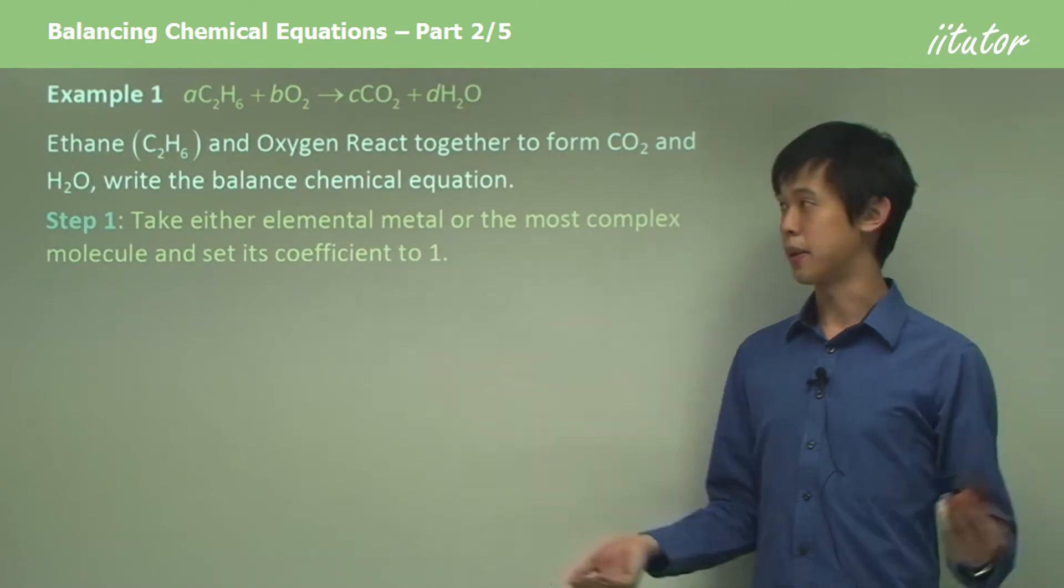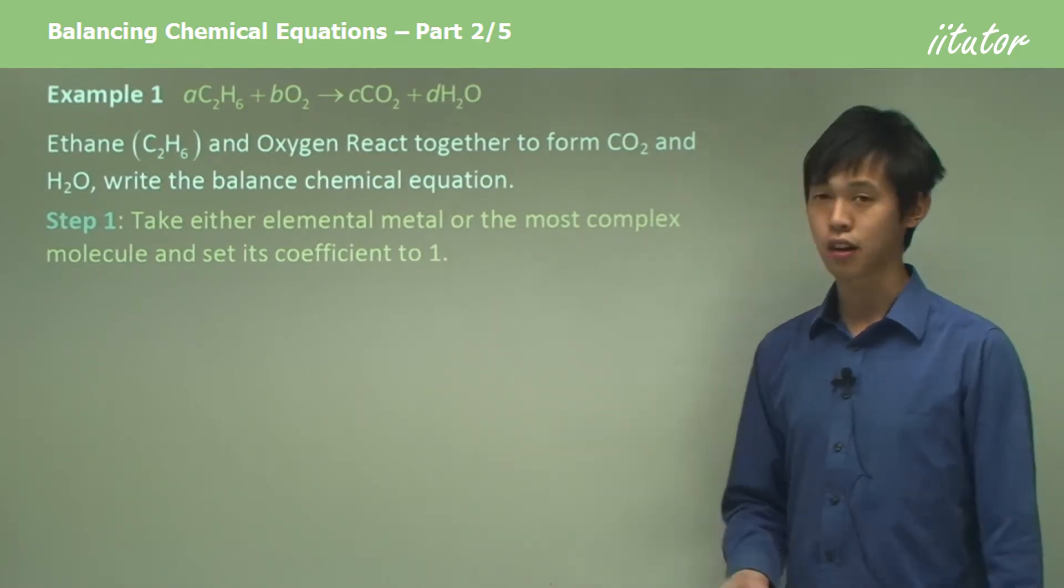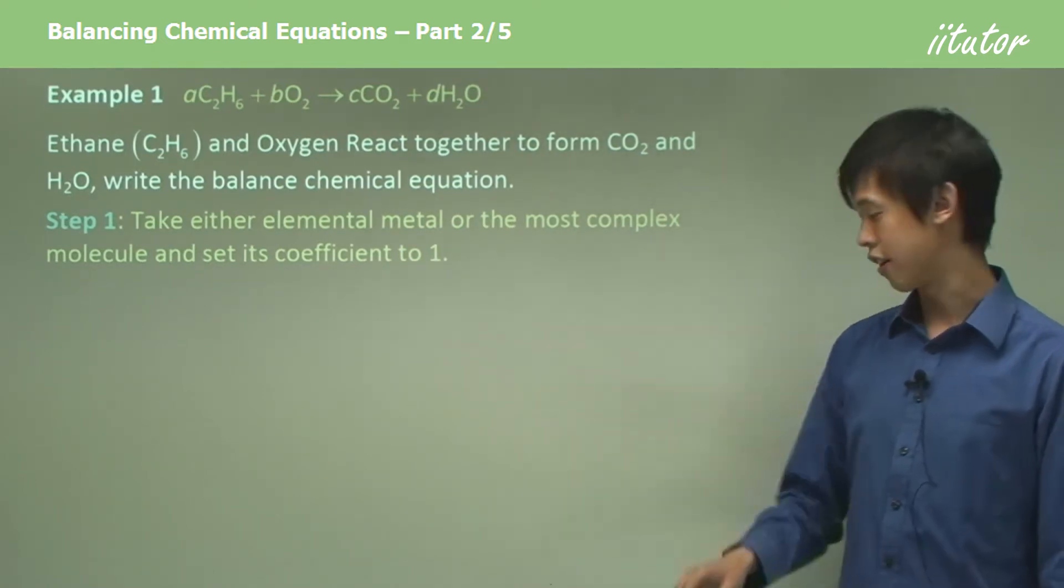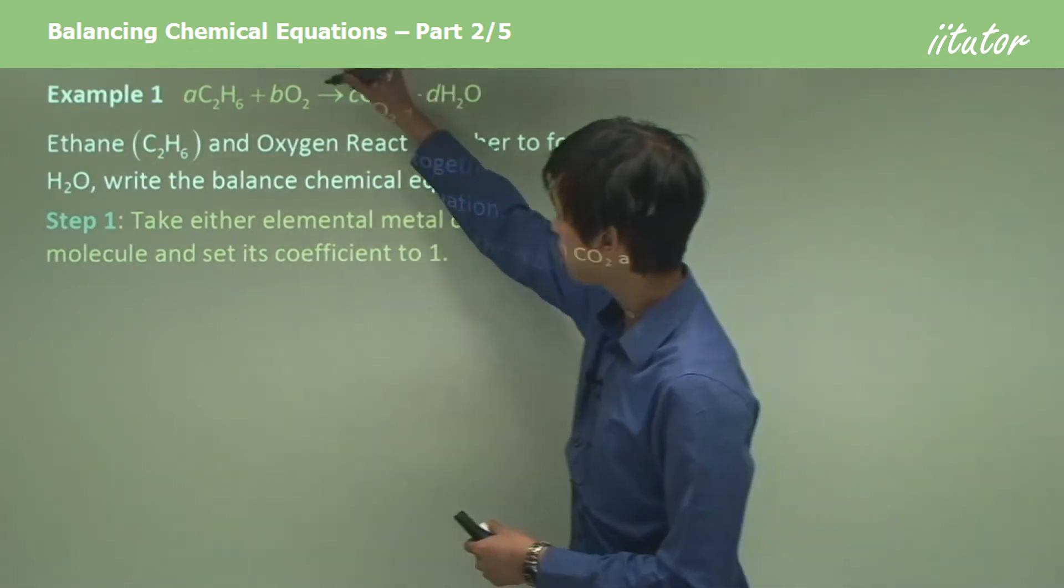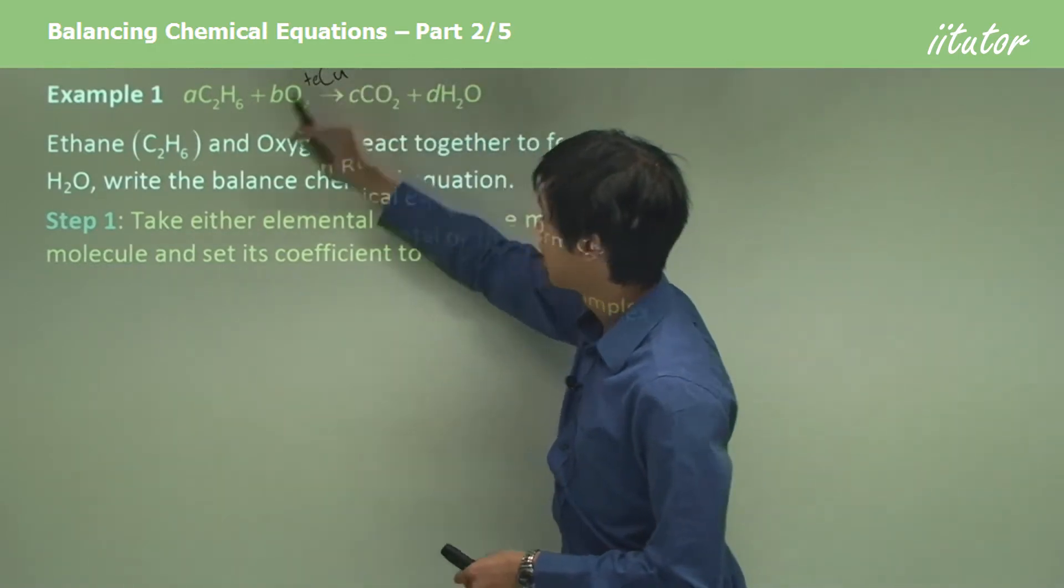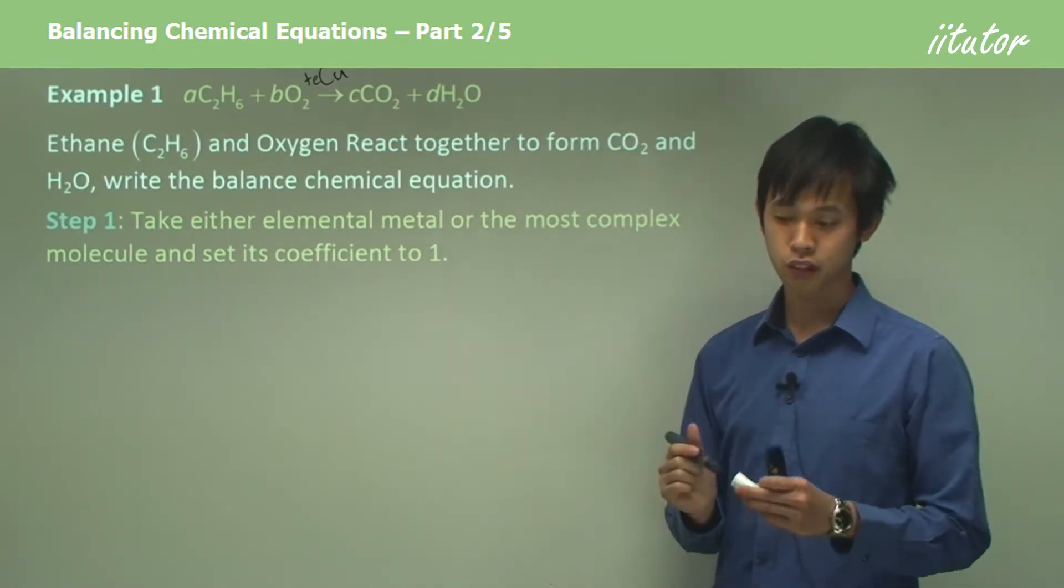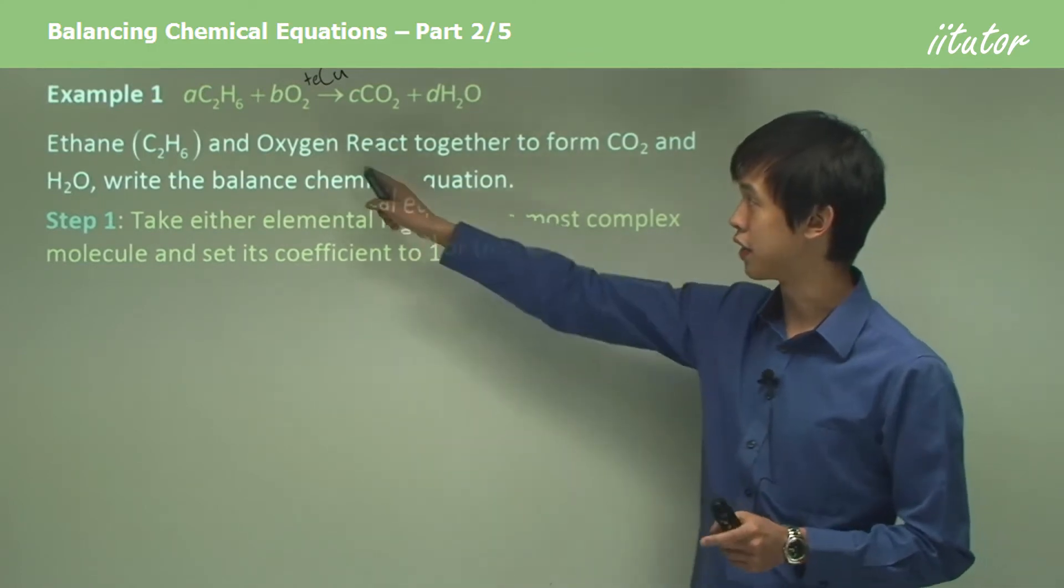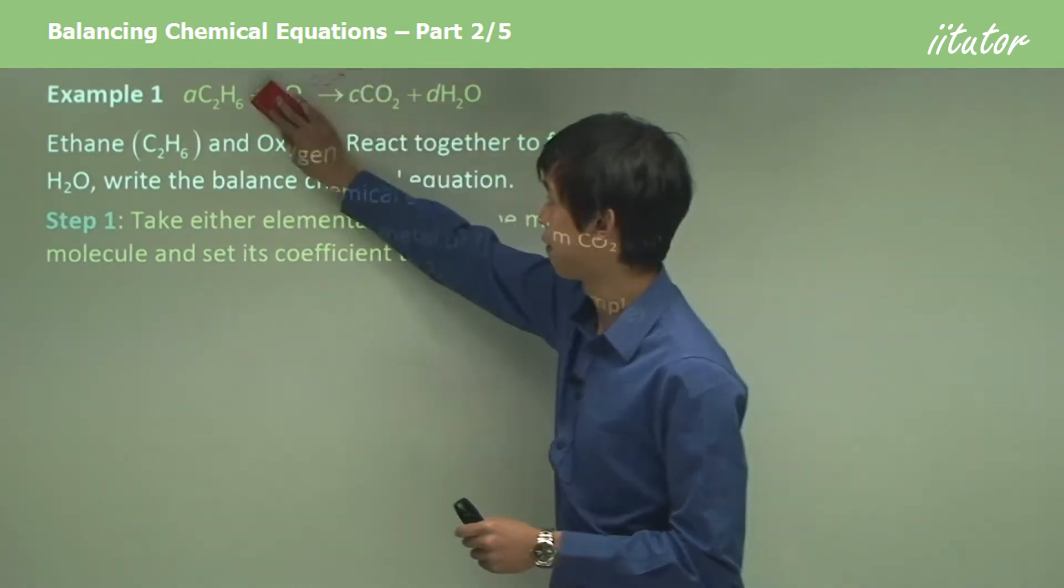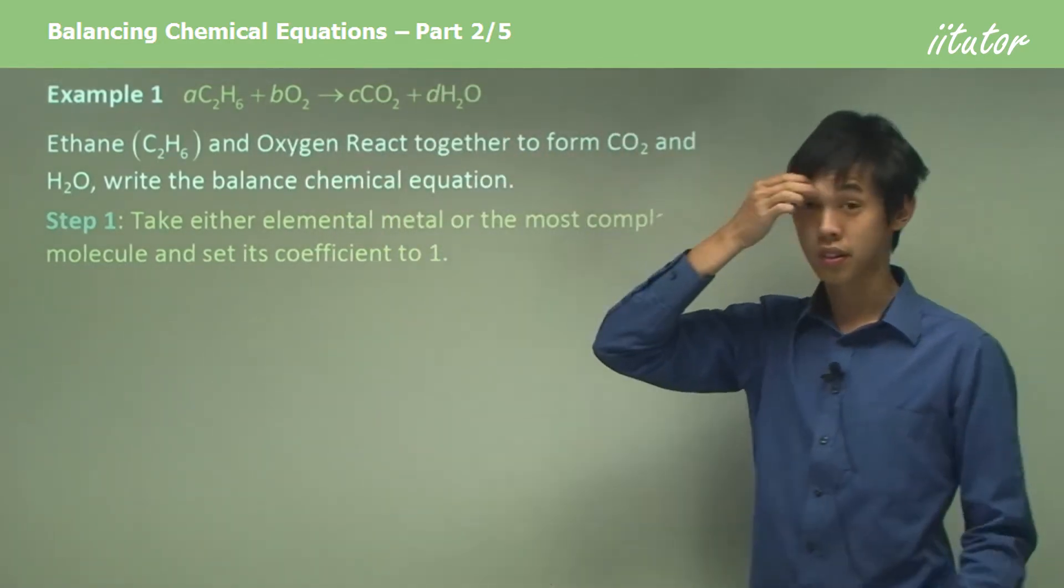Now what are the steps? Step one is take either elemental metals or the most complex molecule and set its coefficient to one. What that means is look for single element metals. So if I saw like a Cu here and it'd be like an E here, then E would be one. That's what the first step means. Just take any elemental metal, the first elemental metal that you can find, and set its coefficient E to one. Now obviously this one doesn't have any metals in it. You can't see any metals. You can see a fuel, oxygen, CO2, H2O, none of those are metals.